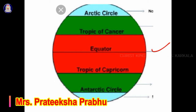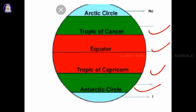To the north of the equator, we have the Tropic of Cancer, which is 23 and a half degrees north latitude. To the south of the equator, you have the Tropic of Capricorn. The Antarctic Circle is 66 and a half degrees south latitude, and the Arctic Circle is 66 and a half degrees north latitude. Above the Arctic Circle is the North Pole, and below the Antarctic Circle is the South Pole, at 90 degrees north and 90 degrees south latitude.